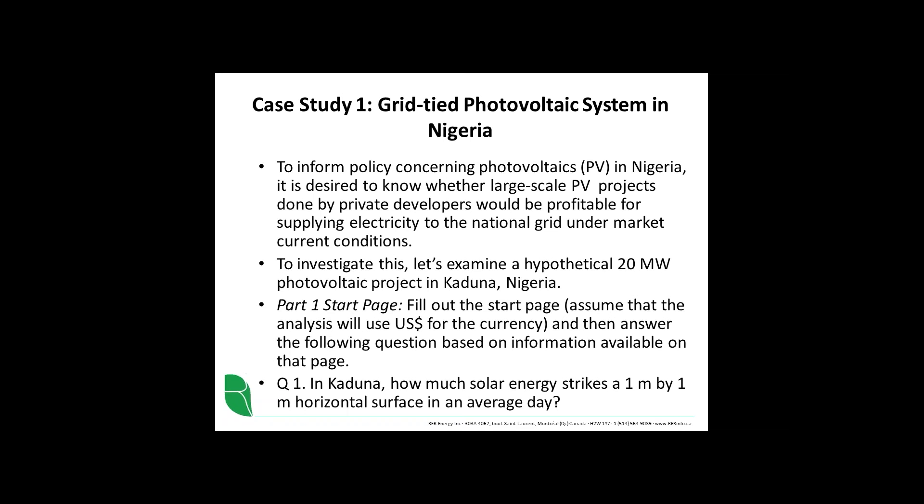We're going to answer that step by step. The first part is just to fill out the start page. In this case we're going to use the U.S. dollar for the currency — in other cases we'll use local currencies like the CFA franc. The only question for part one is: in Kaduna, how much solar energy strikes a one-meter-by-one-meter horizontal surface in an average day? I'll give you about five minutes to work through that. Get RETScreen open on your computer and fill out the start page based on the information on this slide, or from the file sent out yesterday.